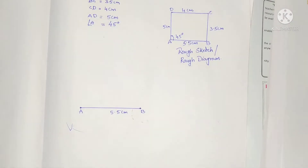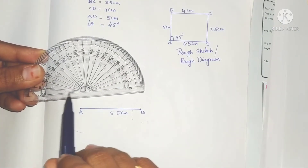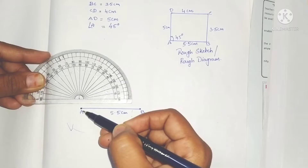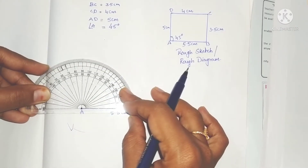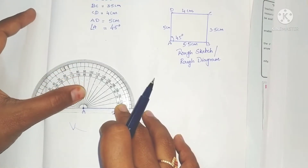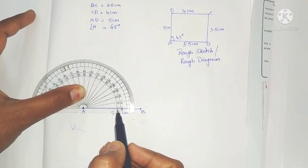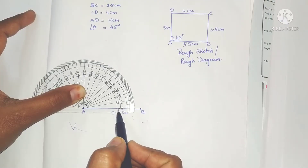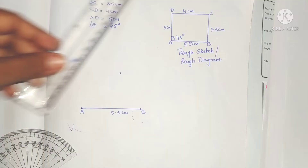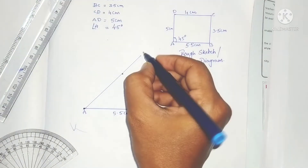Now angle A is 45 degrees. Take the protractor and place it so the intersection of the horizontal and vertical lines coincides with point A. The line starts from this side, so use the down scale. Find 45 degrees — it is the 5th line between 40 and 50. Draw a ray in that direction and label it X.